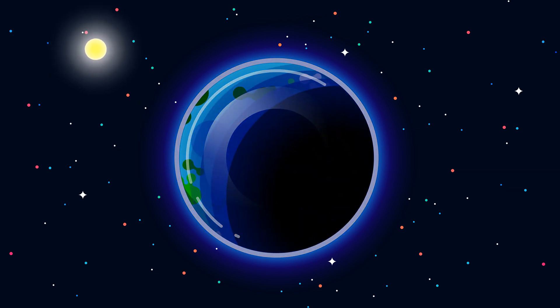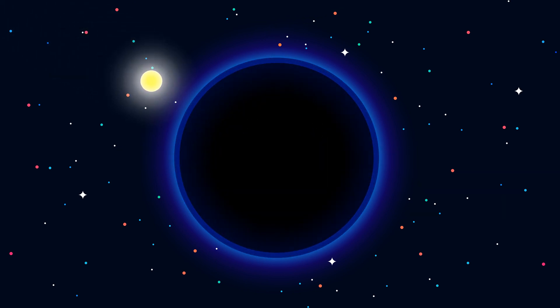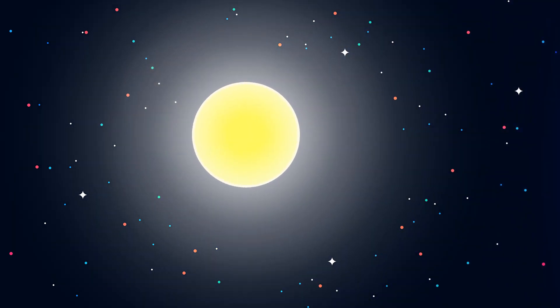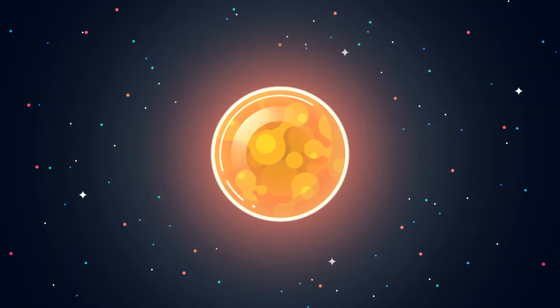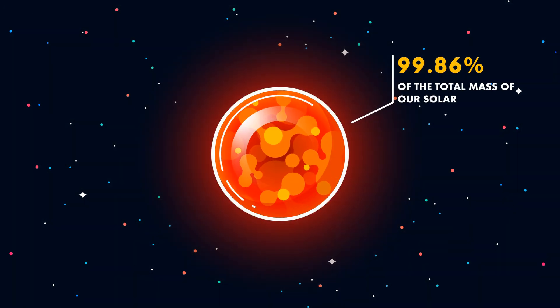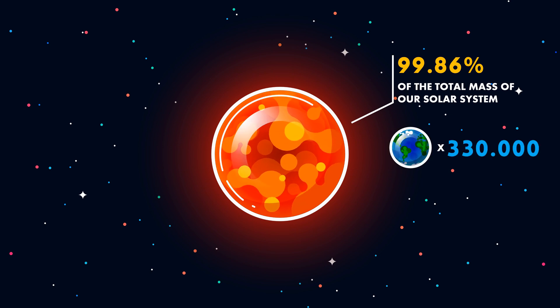There is this one big star we see every day. We cannot live without its light. It is our sun. The sun is gigantic compared to our Earth. Its mass represents 99.86% of the total mass of our solar system. That is the same as 330,000 Earths together.